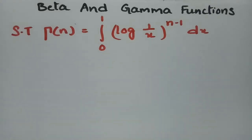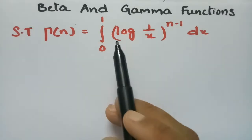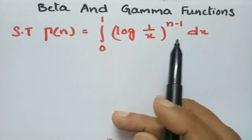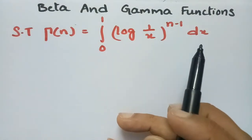This problem is from beta and gamma functions. We have to show that gamma n is equal to the integral from 0 to 1 of log(1/x) to the power n minus 1, into dx.